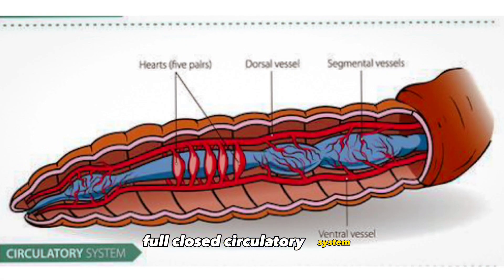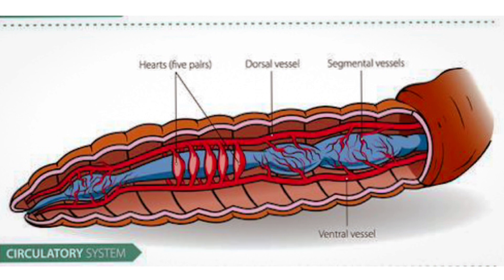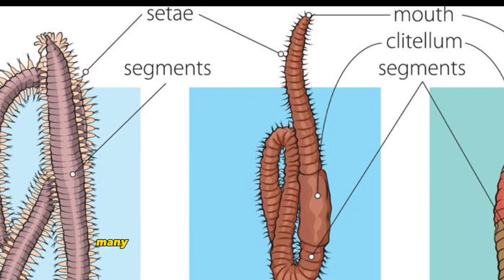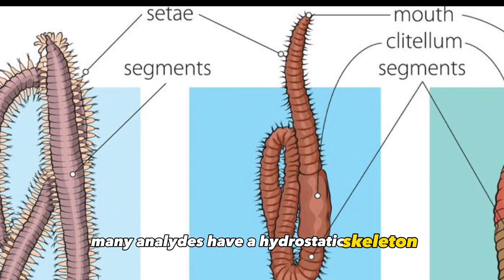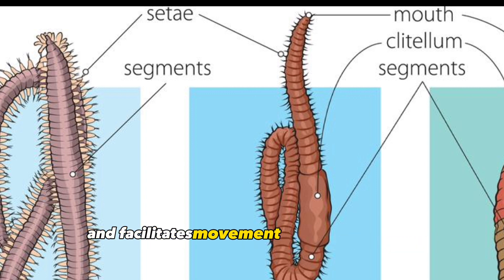Closed circulatory system: They have a closed circulatory system, with blood contained within vessels. This system helps transport oxygen and nutrients throughout the body. Hydrostatic skeleton: Many annelids have a hydrostatic skeleton, which is a fluid-filled cavity that provides support and facilitates movement through muscular contractions.